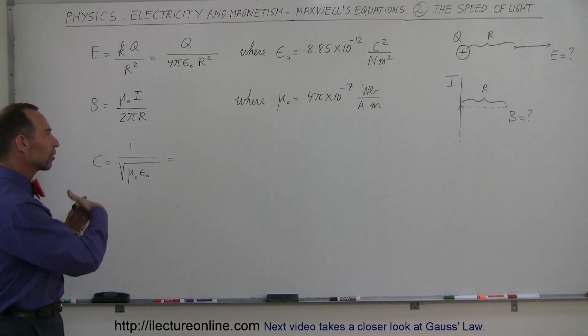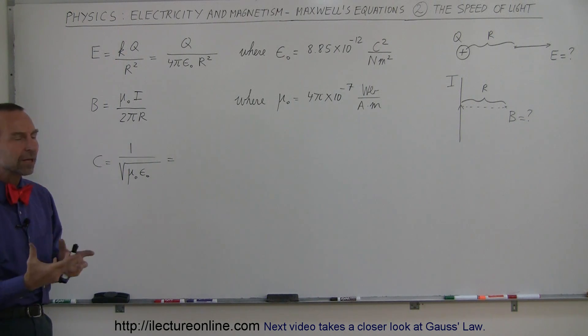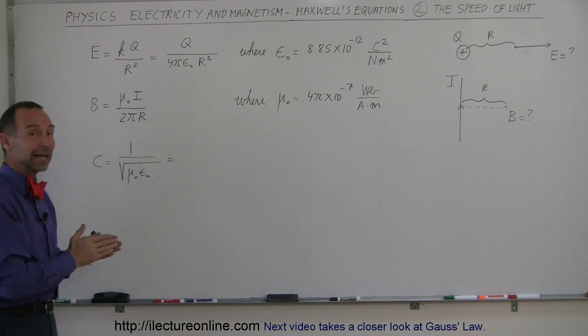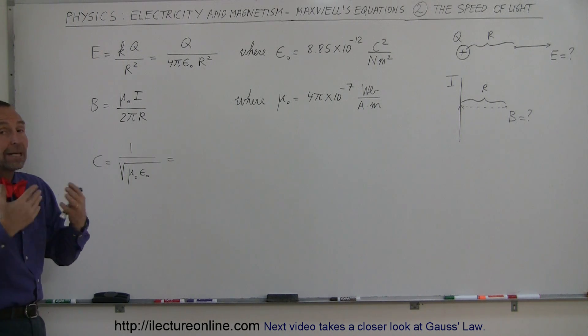Whatever it does, those constants that control how electric fields and magnetic fields interact with each other and work in space, those define the speed at which light can move through space or electromagnetic radiation can move through space.